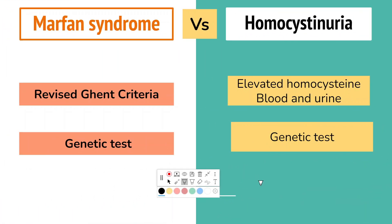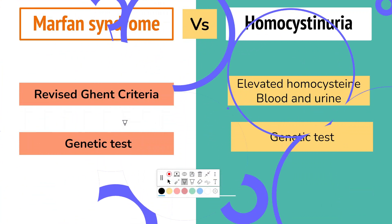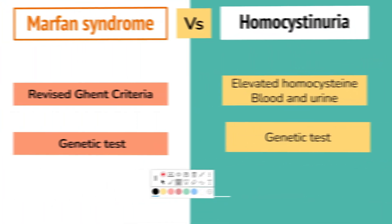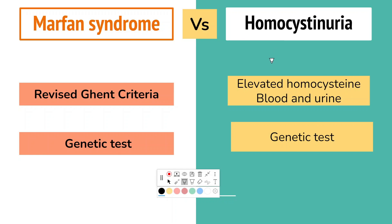Marfan syndrome is diagnosed with the revised Ghent criteria, which we are going to discuss in subsequent slides. A genetic test can also be done to examine the gene responsible for Marfan syndrome. Diagnosis of classical homocystinuria is made by elevated levels of homocysteine and methionine, and a genetic test looking for changes in both copies of the CBS gene can confirm the diagnosis.